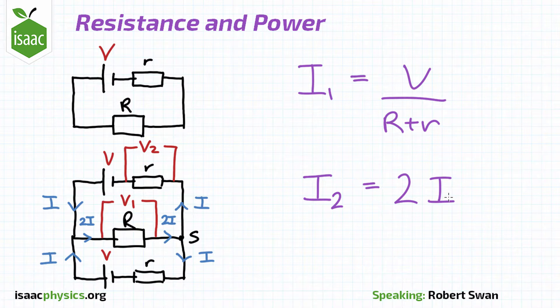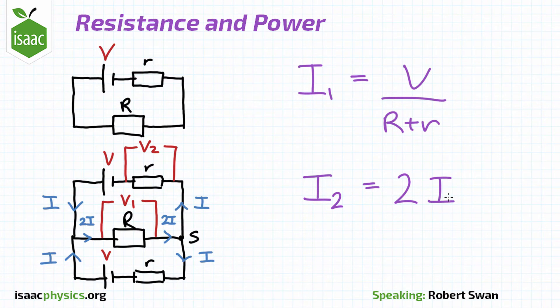Therefore we can find an expression for i2 over i1 in terms of uppercase R and lowercase r. We can then substitute our answer for uppercase R over lowercase r from the first part of the question to evaluate i2 over i1.